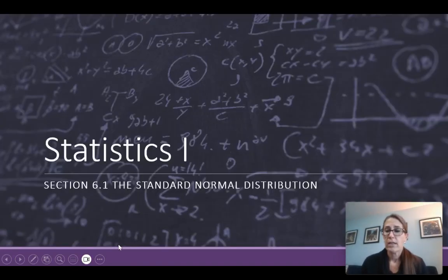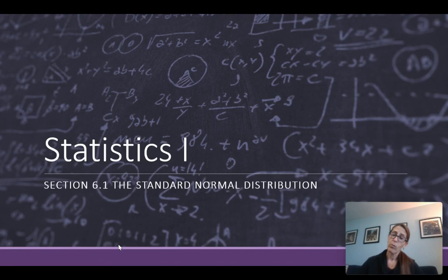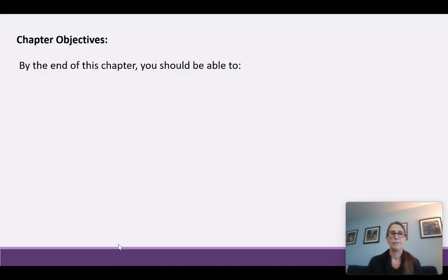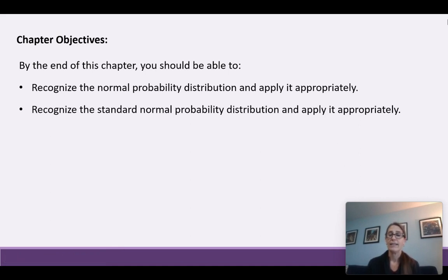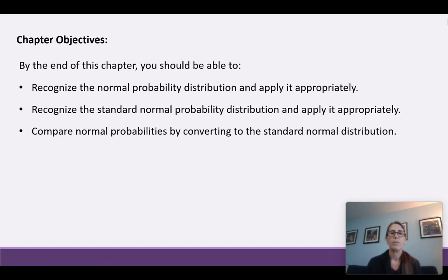This video is on section 6.1 on the standard normal distribution. By the end of chapter 6, you should be able to recognize the normal probability distribution and apply it appropriately, recognize the standard normal probability distribution and apply it appropriately, and compare normal probabilities by converting to the standard normal distribution.